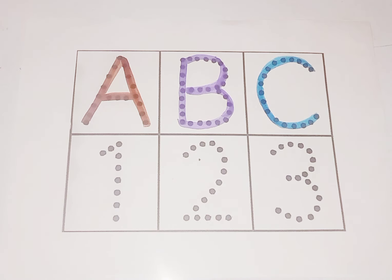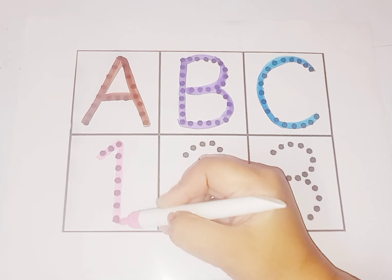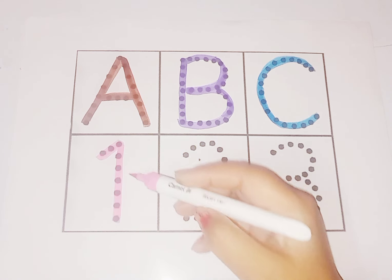Now we learn numbers and their spelling. Light pink color number one: O-N-E, one. O-N-E, one. This is number one.